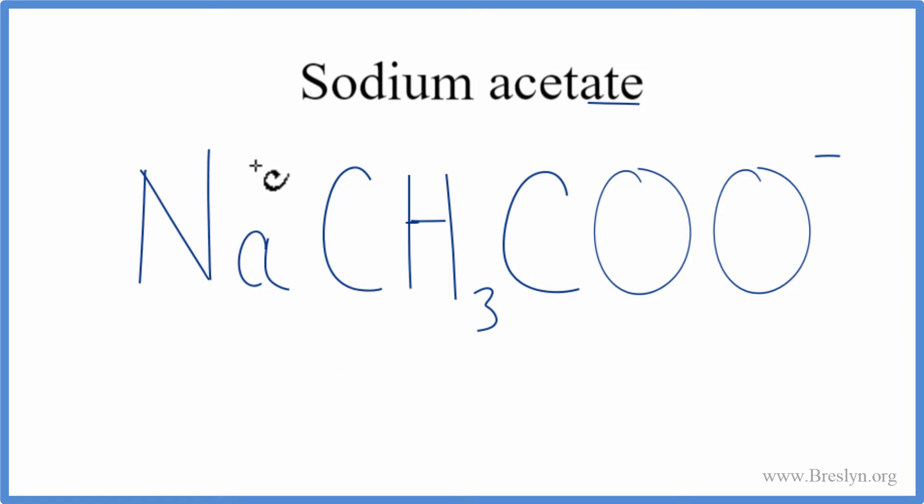Sodium on the periodic table, it's in group one, it has a one plus charge. We said the acetate had a one minus. So these charges, they need to add up to zero, they do. So this is one way to write the formula for sodium acetate.